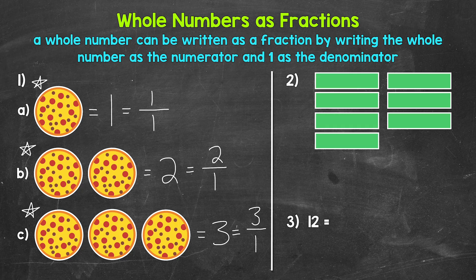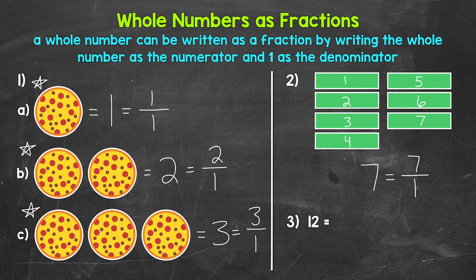Let's move on to number two, where we have rectangles — seven whole rectangles. So we have seven. As a fraction, each rectangle is just one part, so one is our denominator. And we have seven wholes, so seven is our numerator. We have seven wholes and each is divided into one part. So our fraction is seven over one.